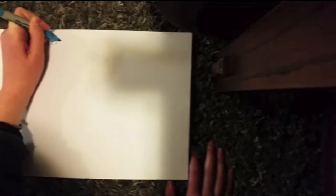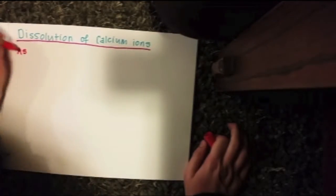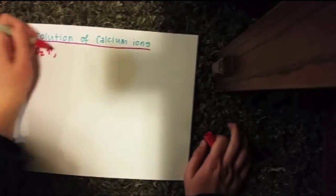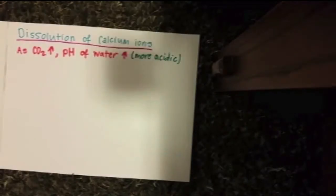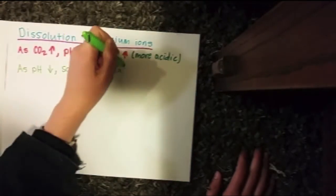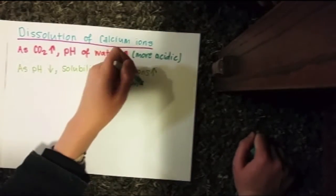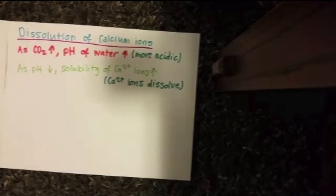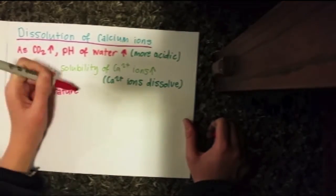This is what occurs for the dissolution of calcium carbonate. As carbon dioxide increases in the ocean, the pH or alkalinity of the ocean water decreases — I put increases, but it decreases. As the alkalinity goes down, the water becomes more acidic and the ions of calcium 2+ become more soluble. As a result, calcium carbonate is less likely to precipitate.